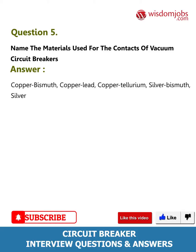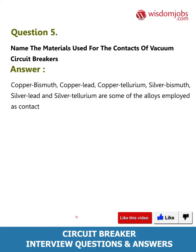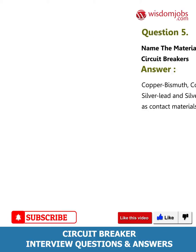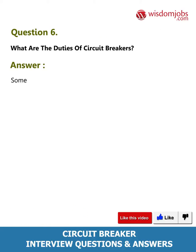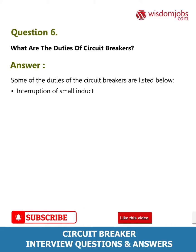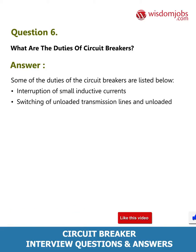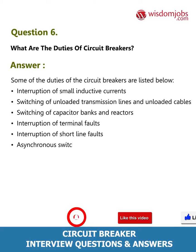silver bismuth, silver lead, and silver tellurium are some of the alloys employed as contact materials in vacuum circuit breakers. Question 6: What are the duties of circuit breakers? Answer: Some duties include interruption of small inductive currents, switching of unloaded transmission lines and unloaded cables, switching of capacitor banks and reactors, interruption of terminal faults, interruption of short line faults, and asynchronous switching.